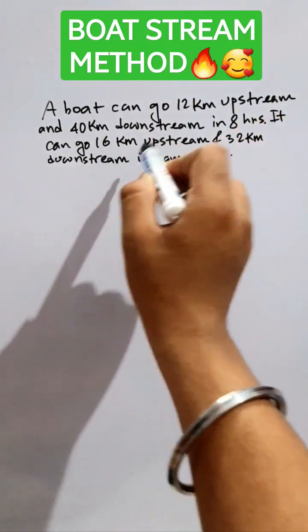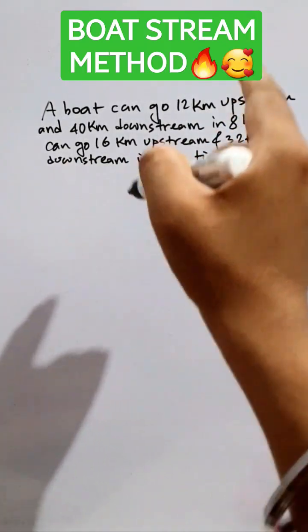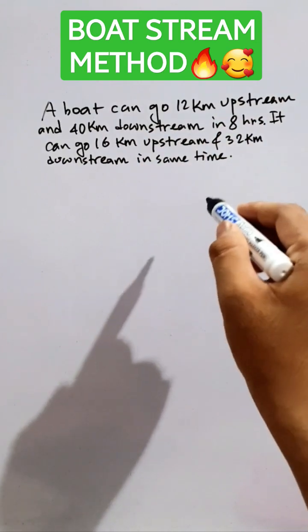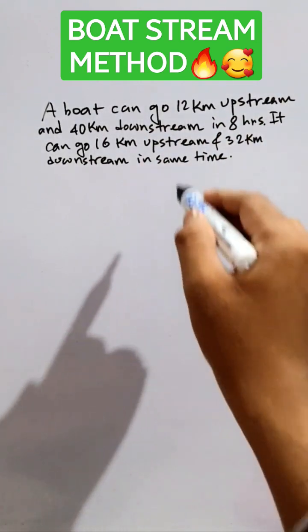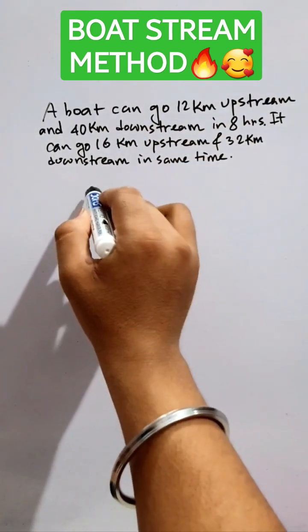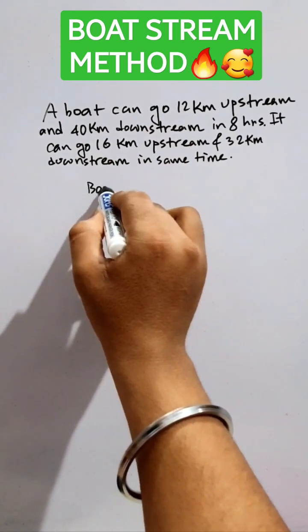Eight hours. And in the second case, 16 kilometers upstream and 32 kilometers downstream in the same time. We have to find the speed of the boat and the stream also. So let's assume the speed of the boat as u.